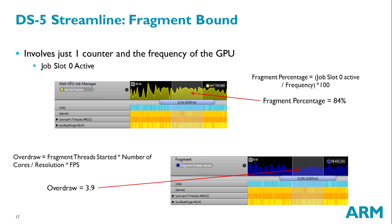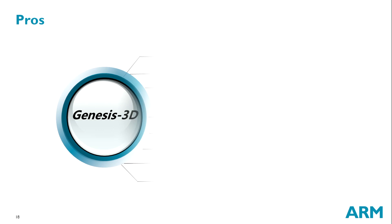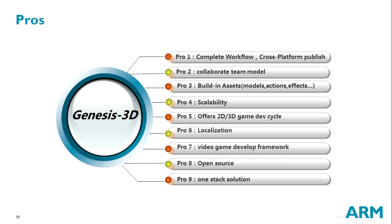The pros of Genesis 3D: it's a complete workflow, cross-platform publishing, and a collaborating model. It provides built-in assets — models, actions, and effects. It has scalability and offers 2D and 3D game dev support. It's localized for Chinese small and medium teams, and maybe next year we'll provide an English version for global markets. It's a video game developer framework — open source, free, and a one-stack solution.